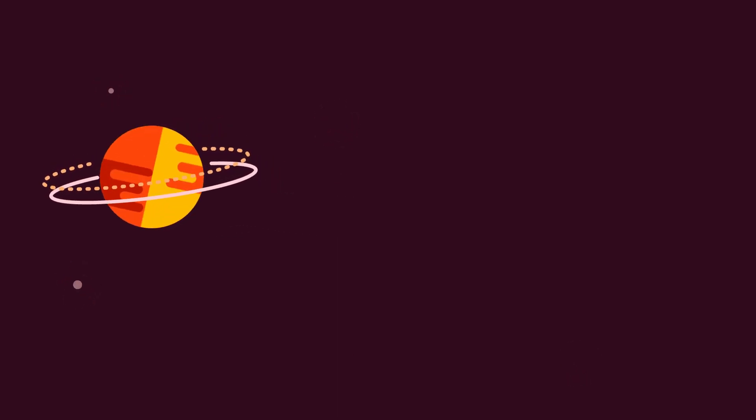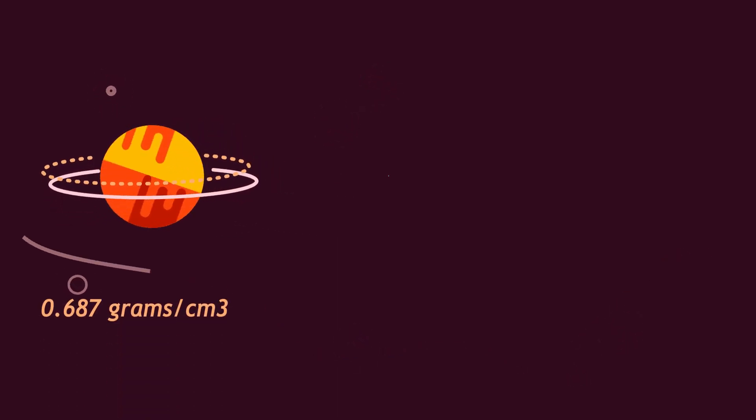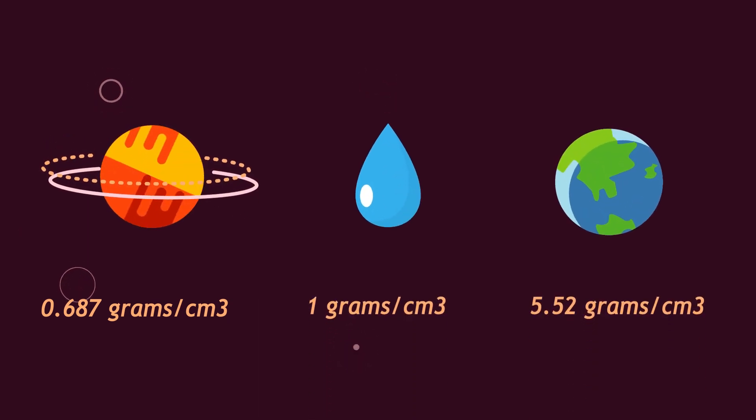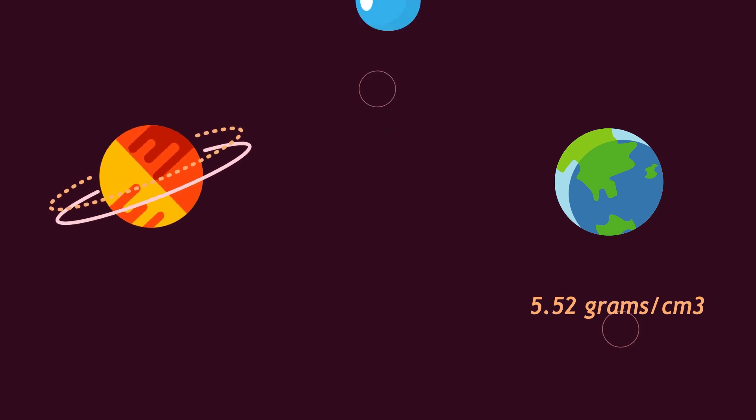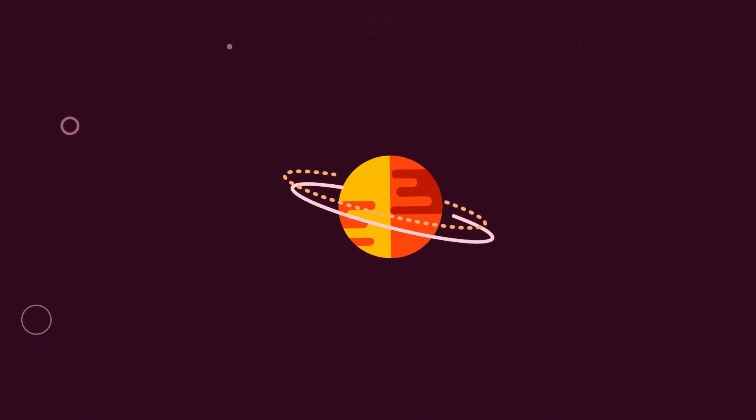Saturn has a density of 0.687 grams per cc. Just for comparison, water is 1 gram per cc and the Earth is 5.52. Since Saturn is less dense than water, it would actually float like an apple if you could find a pool large enough.